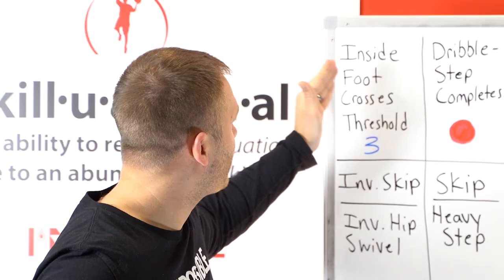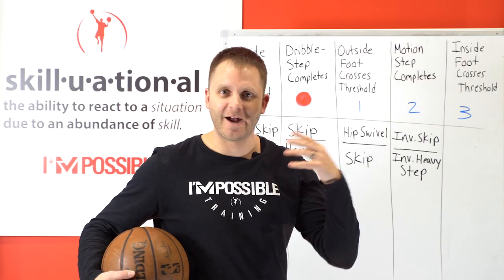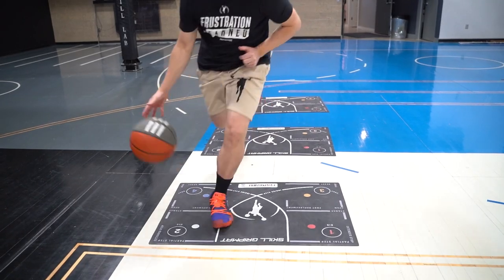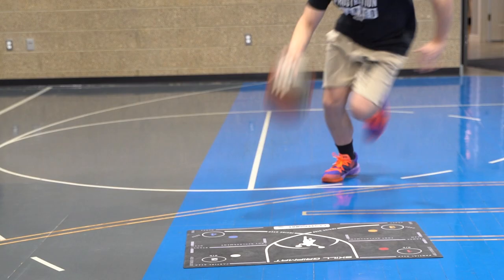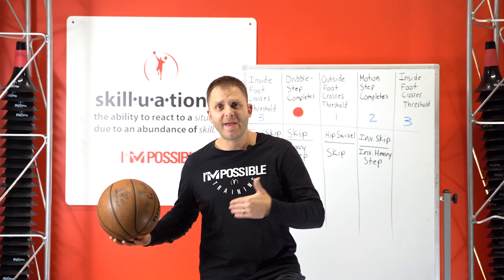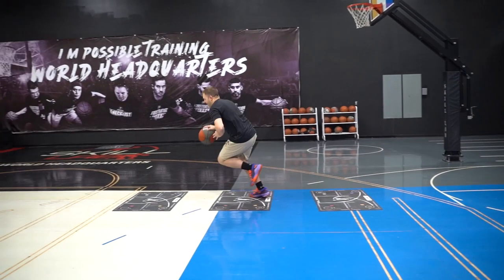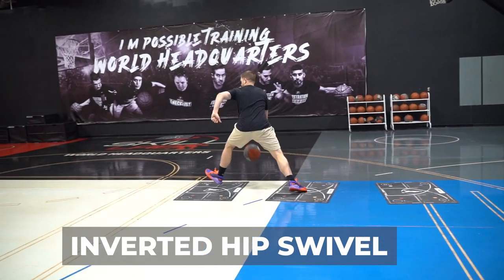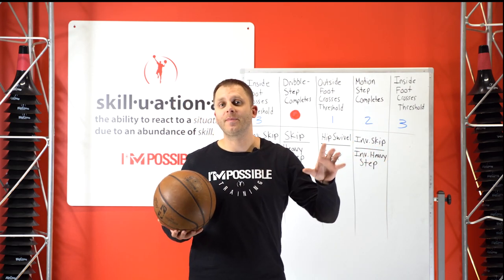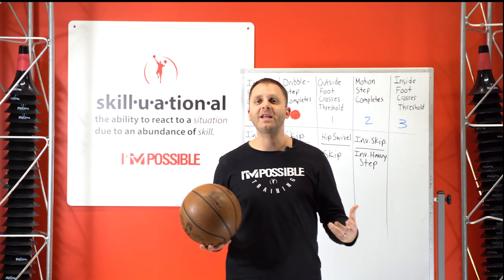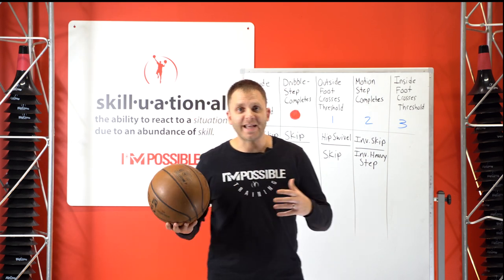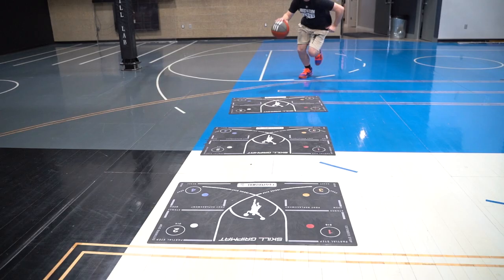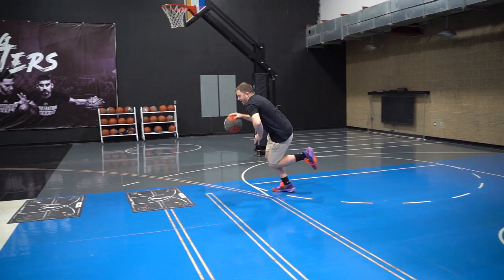The first pocket of time we're going to look at is when the inside foot crosses the threshold. If you think about your outside foot and you're in the middle of a drive, your inside foot is going to start crossing the threshold of that foot. Pause that moment in time — the ball's in your pocket, you haven't made your step yet. Can you actually read and react in this moment? Your options are: you can do an inverted skip and you can do an inverted hip swivel. Those terms sound detailed, but that's why the videos on the screen will be helpful. That's something you can do during this initial step, right as the inside foot crosses the threshold, and then you have another set of options once that foot hits the floor and you complete the dribble step.